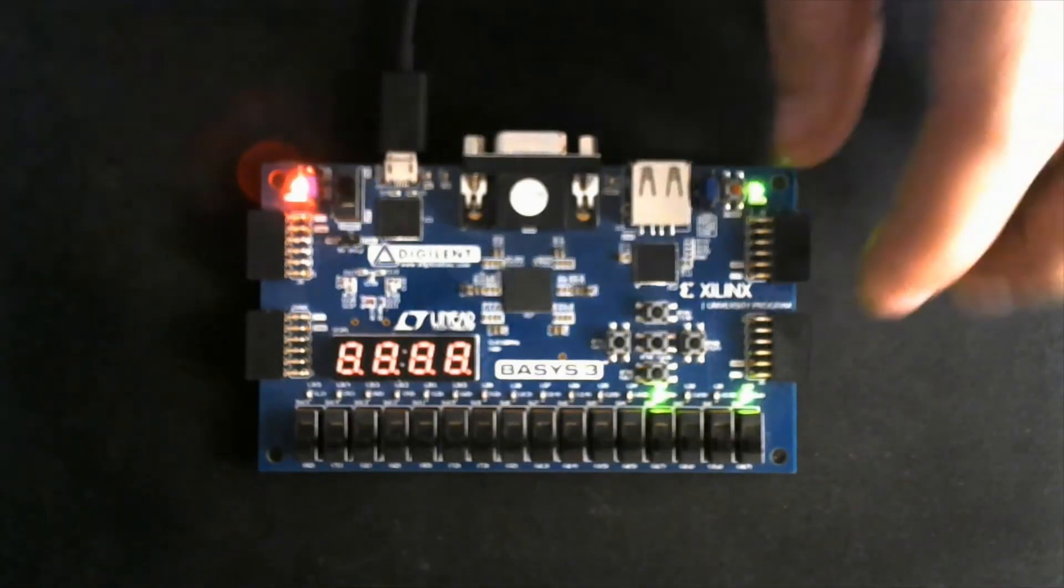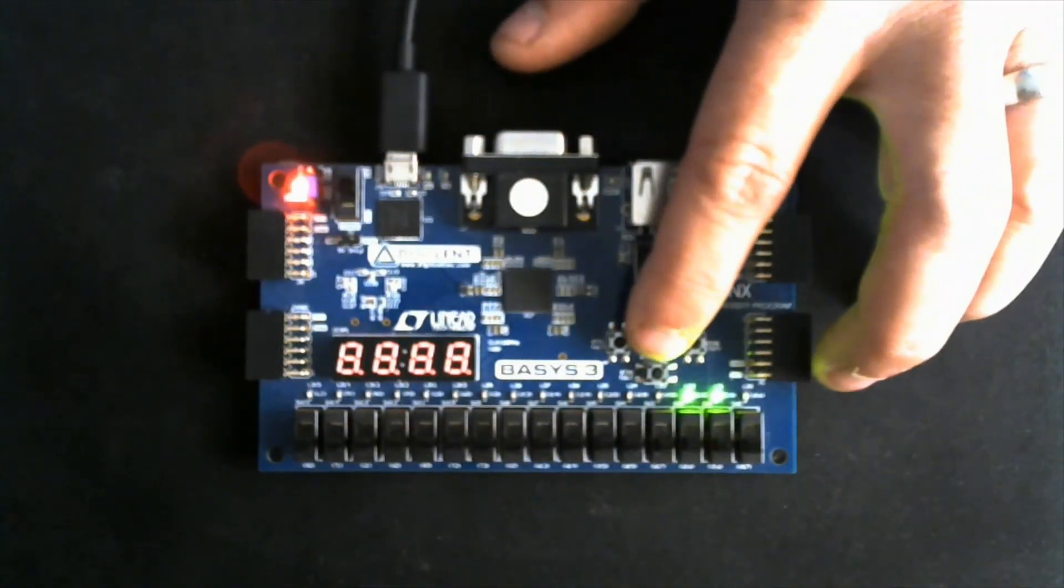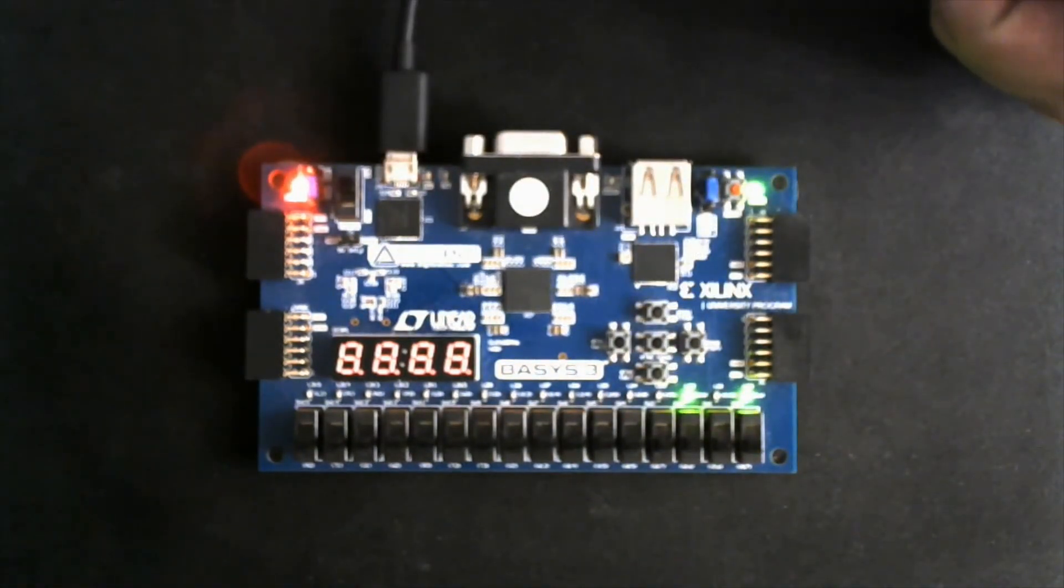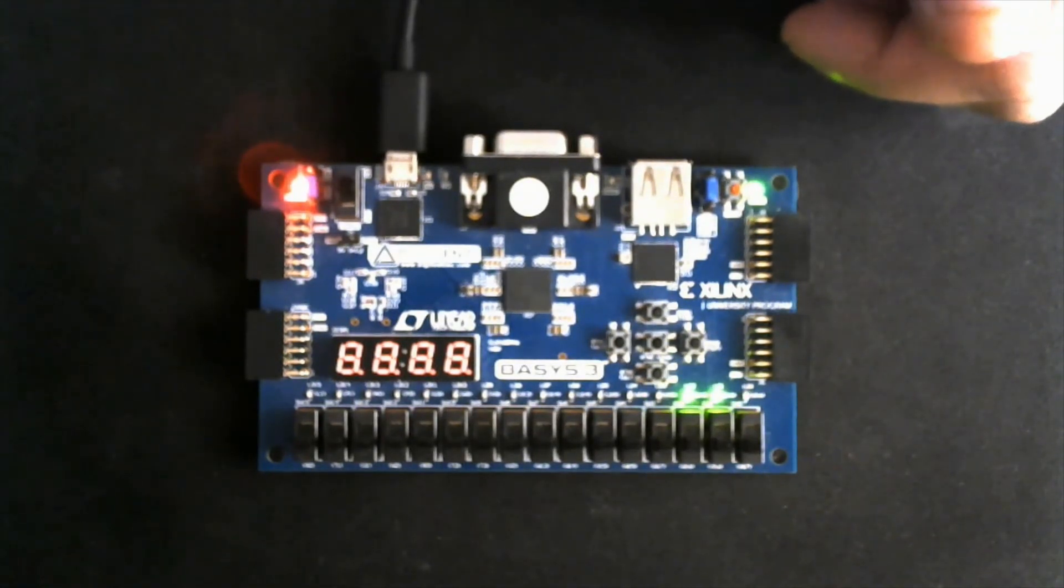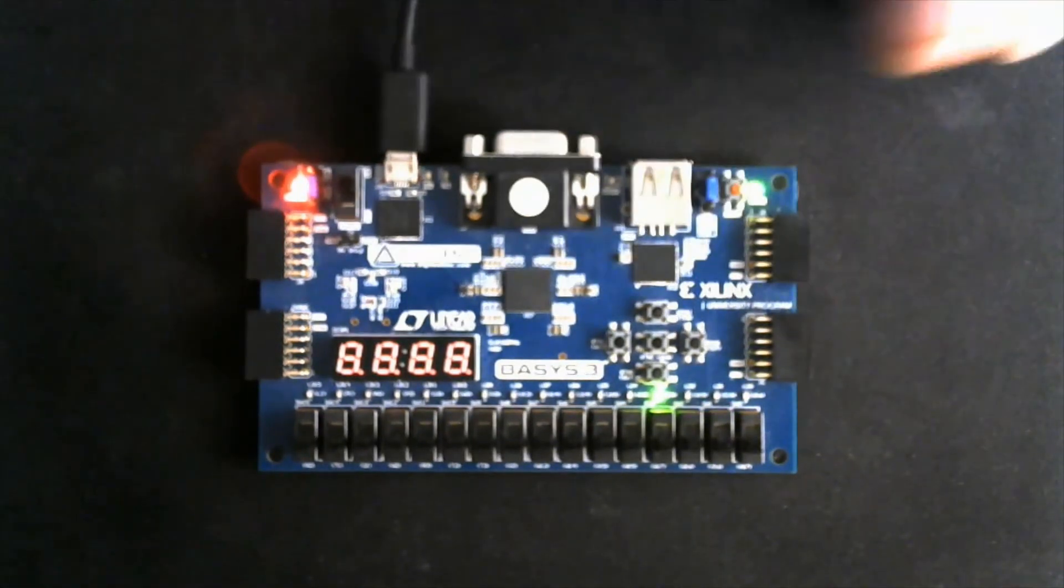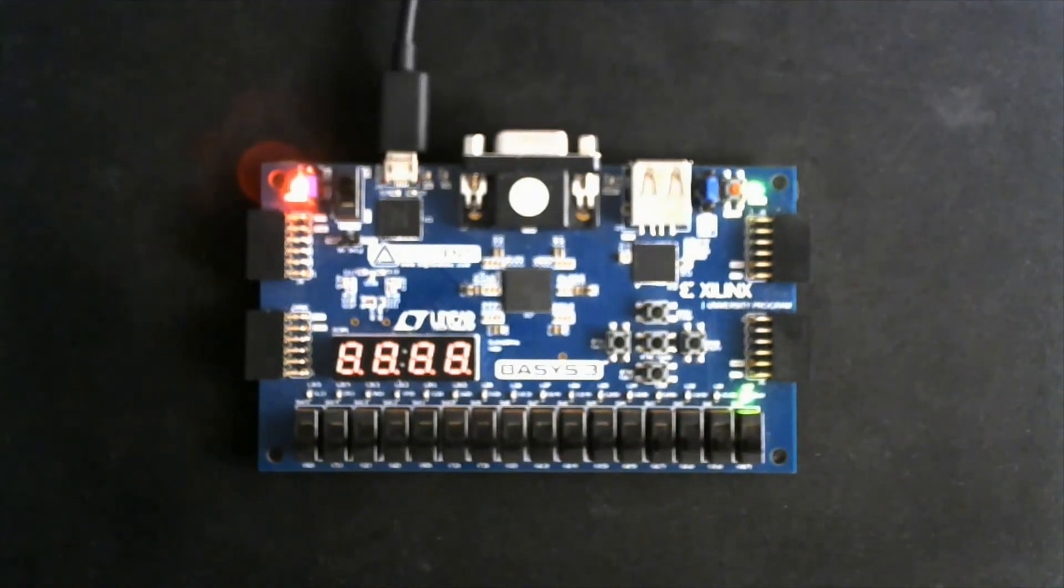All right, so here's the Basys 3. I'll go ahead and hit reset. We'll start the counter over, and now it's going in its sequence. You can follow along from the sequence on the PowerPoint, but here you have the LFSR, four bits, counting on the Basys 3 coded in Verilog. Thanks for watching.